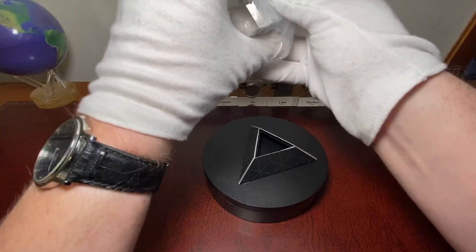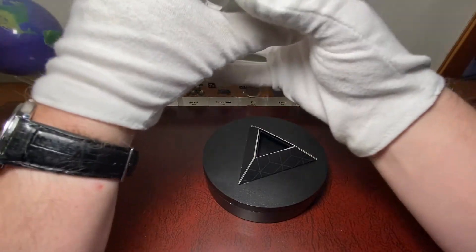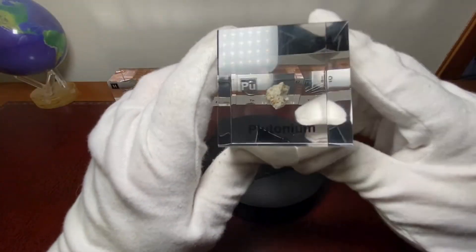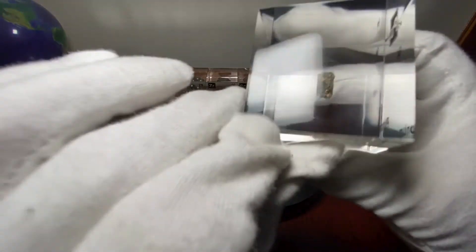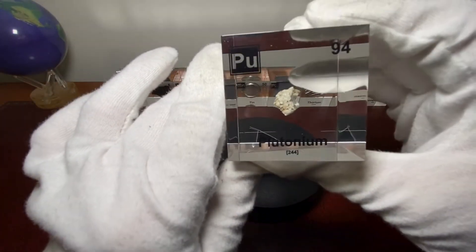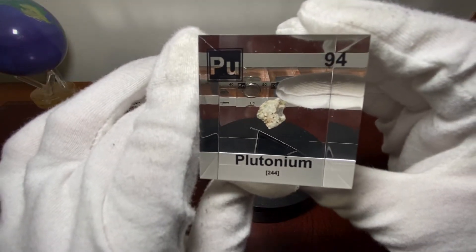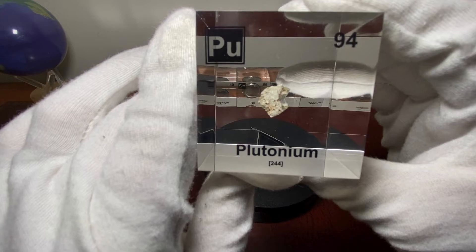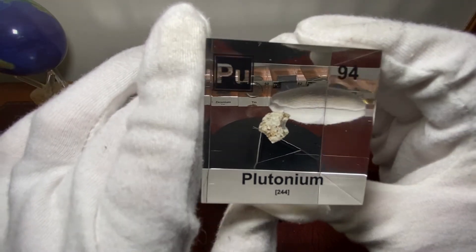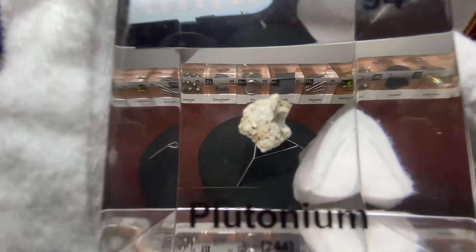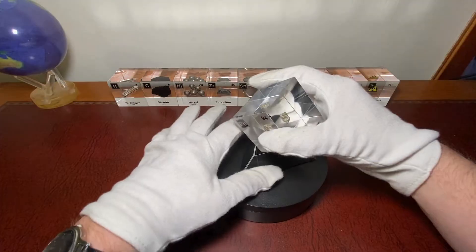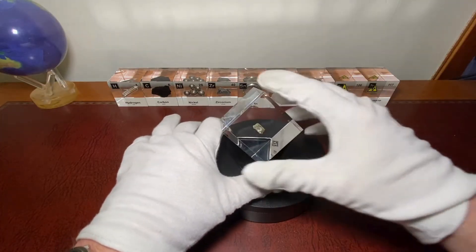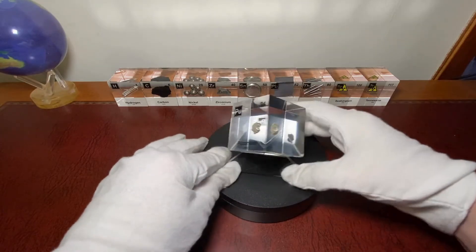We'll answer that question at the end of the episode. What we got here now is actually something in there. This is beautiful. So it is element 94, it has 244 mass, its letters are Pu, and it looks like a greenish kind of rock. Let's put it in the middle.